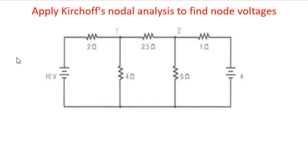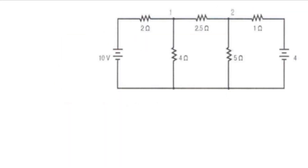Apply nodal analysis to find node voltages. In the given circuit, nodes 1 and 2 are directly marked. Node 1 is here and node 2 is here. We need to find the voltages at node 1 and node 2. We assume voltage V1 at node 1 and voltage V2 at node 2.